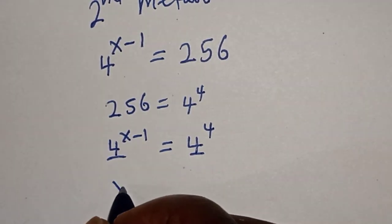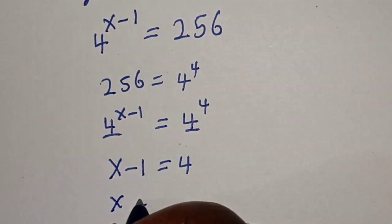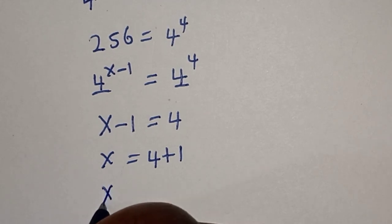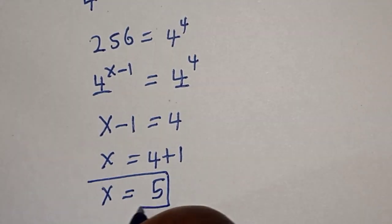So x minus 1 is equal to 4. x is equal to 4 plus 1. Then x is equal to 5. That is our answer.